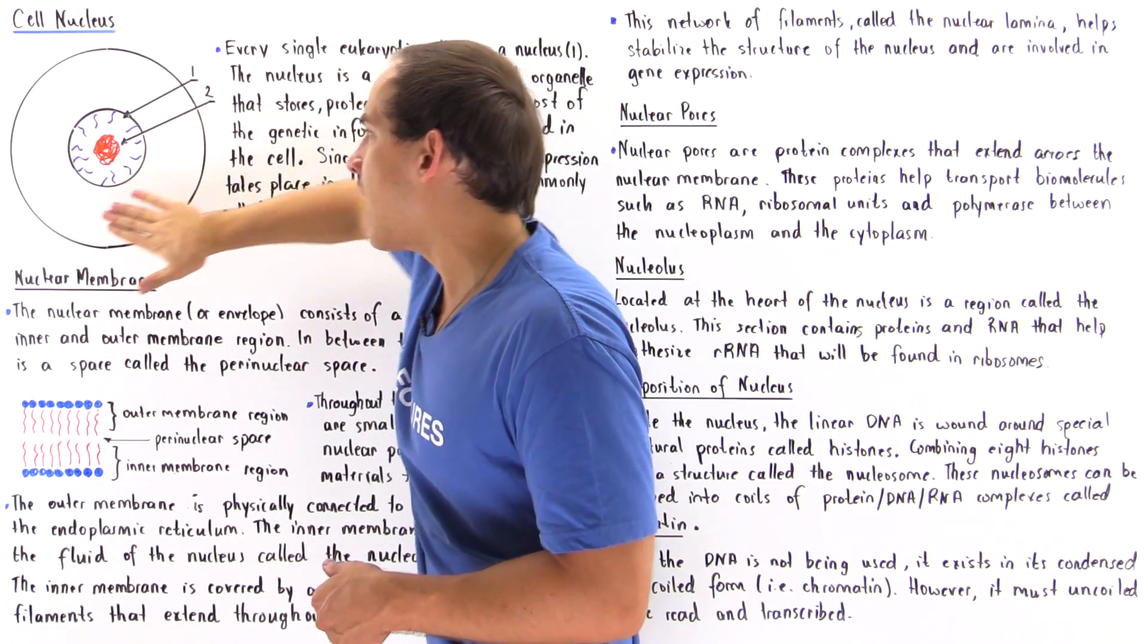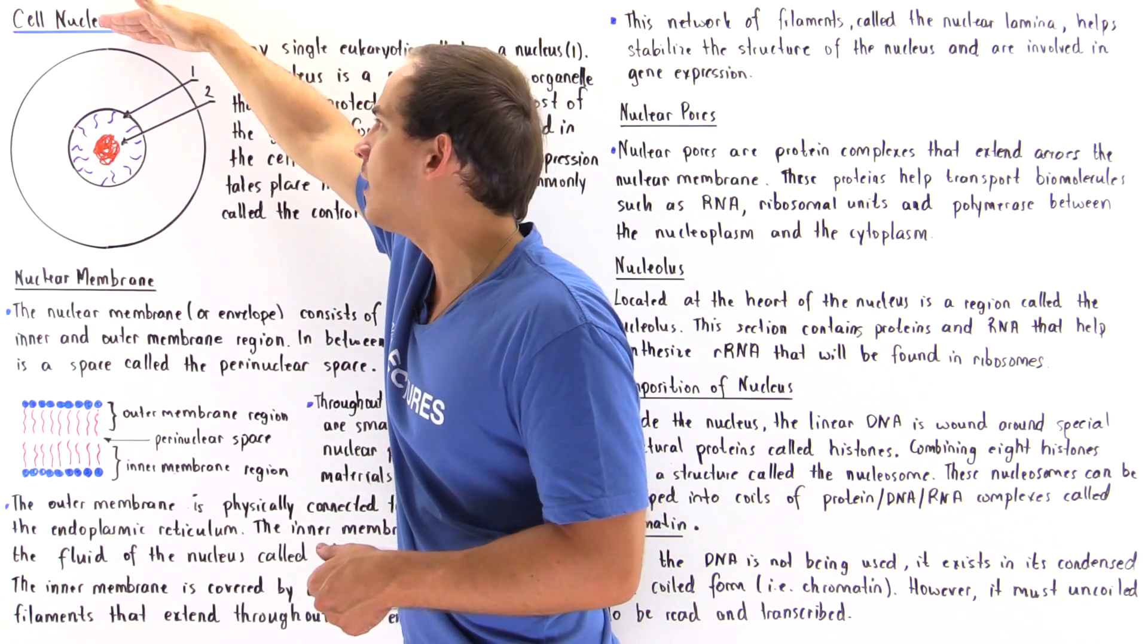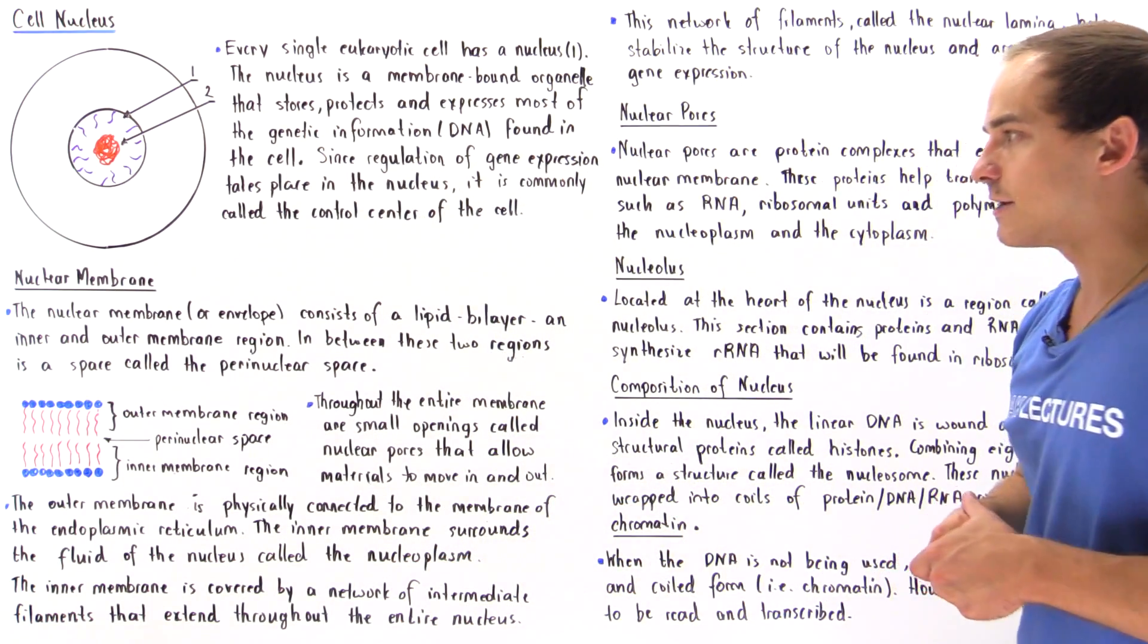The cytoplasm is the entire region found between the cell membrane and our nuclear membrane.